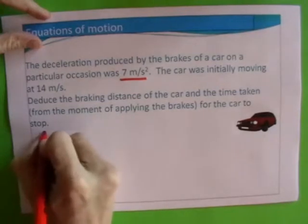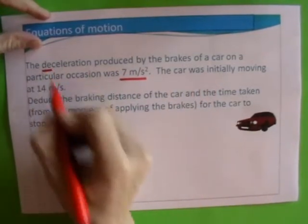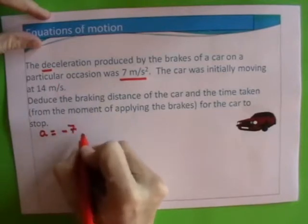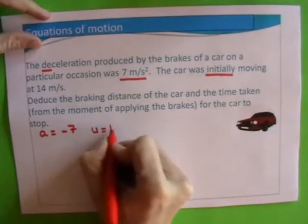So we already know a is equal to, now it says it's deceleration, so we're going to write it as minus 7. The car was initially moving at 14, so u is equal to 14.